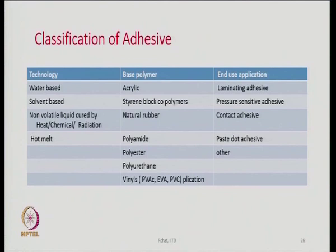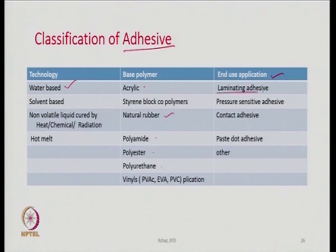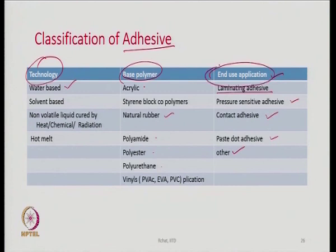So there are basically four different theories of adhesion. Now, adhesive types: technology-wise, some adhesives could be water-based, solvent-based, non-volatile, or hot melt. Base-polymer-wise, they could be acrylic, styrene block co-polymers, natural rubber, polyamide, polyester, polyurethane, or vinyls. Applications-wise, there are laminating adhesives, pressure-sensitive adhesives, contact adhesives, paste dot adhesives, and others. We can classify according to technology, base polymer, or end-use applications.